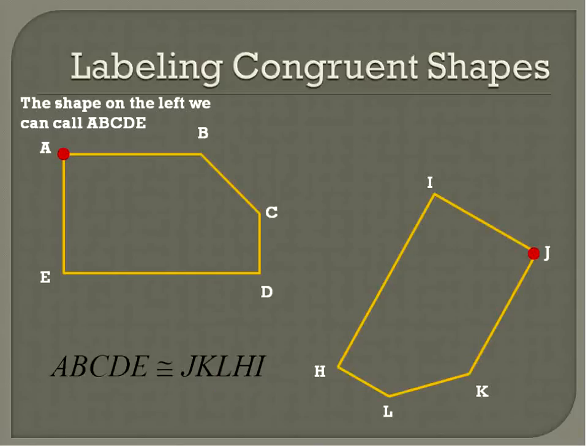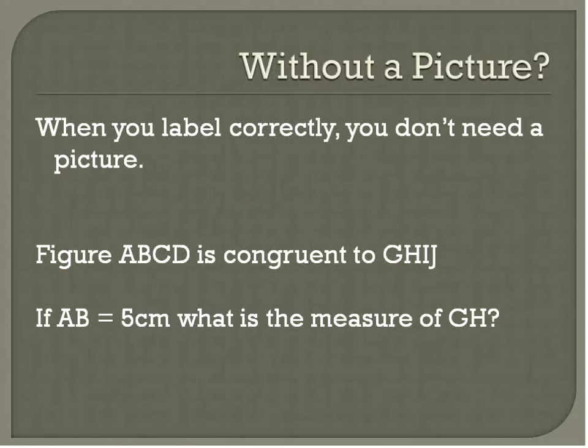And labeling in that way has many advantages. And I'll show you one of the advantages here. When you label correctly, you don't need a picture. So here's an example. If figure A, B, C, D is congruent to G, H, I, J. We're told that.